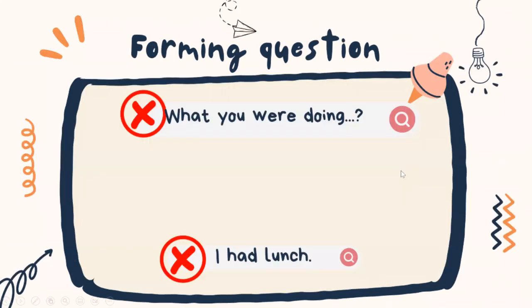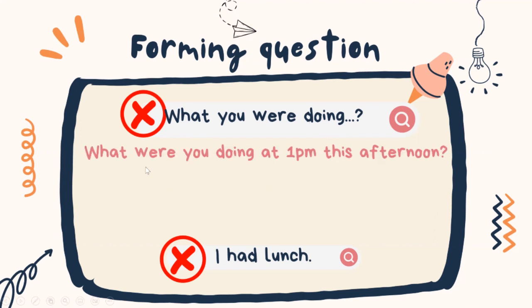You may wonder how we can form a question using the past continuous tense. We cannot form a question by saying 'what you were doing.' Instead, we should ask: 'What were you doing at 1pm this afternoon?' And when we are answering the question, we also have to use the same tense.